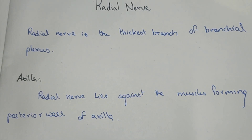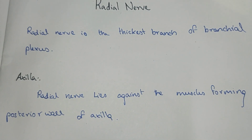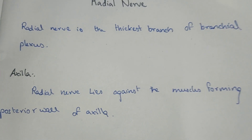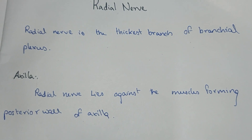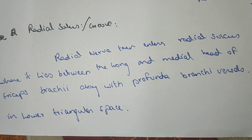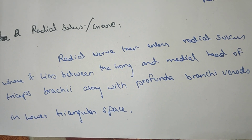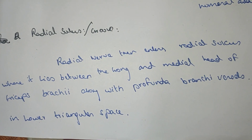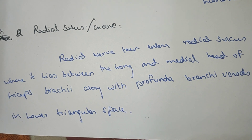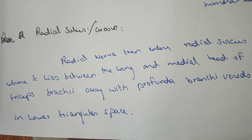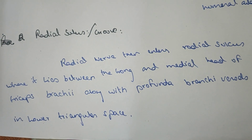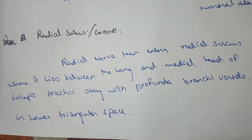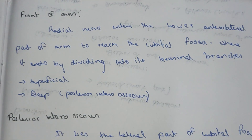The radial nerve lies against the muscles forming the posterior wall of the axilla. It then enters the radial sulcus, or radial groove, where it lies between the medial head of the triceps, along with the profunda brachii vessels, in the lower triangular space.